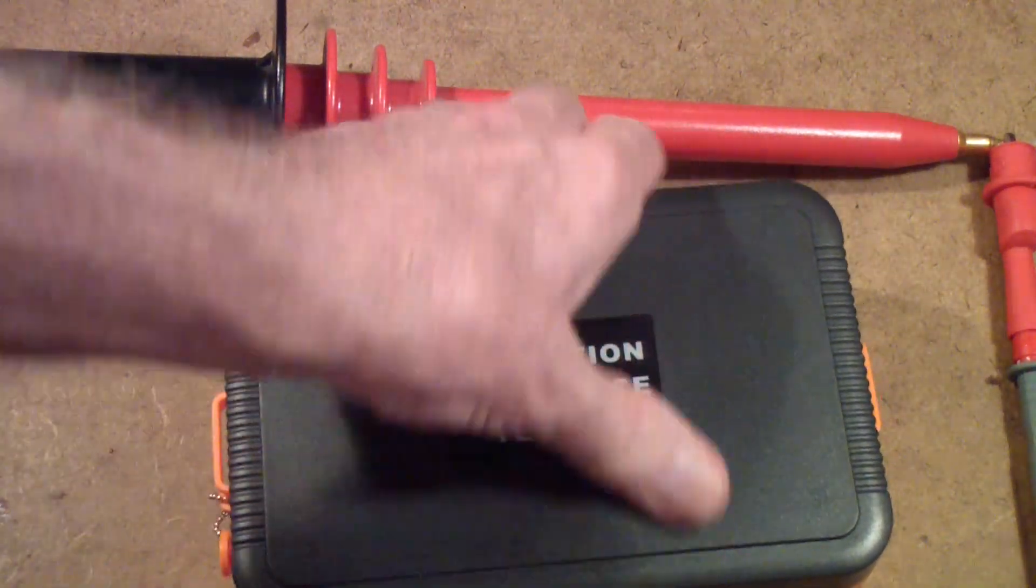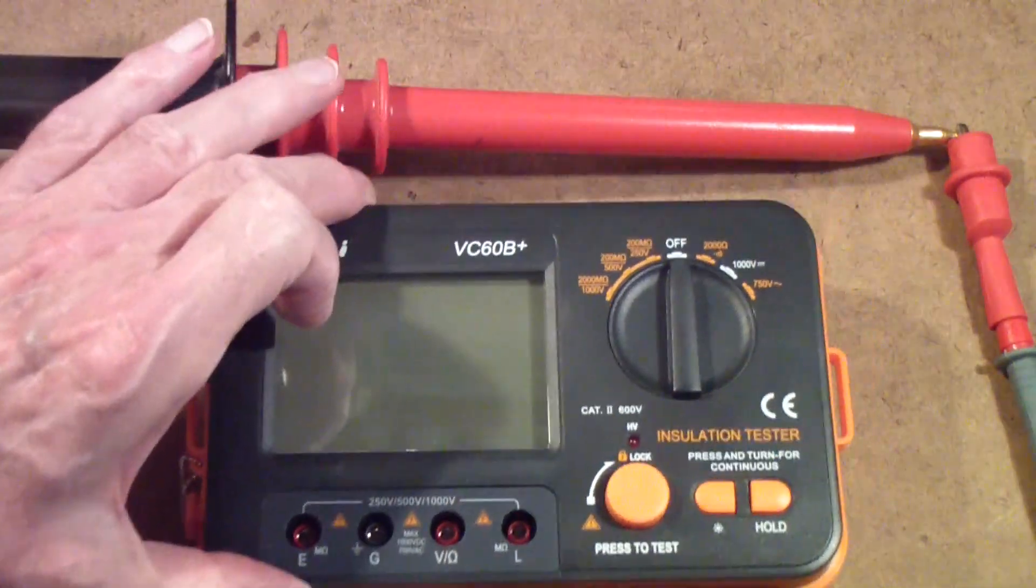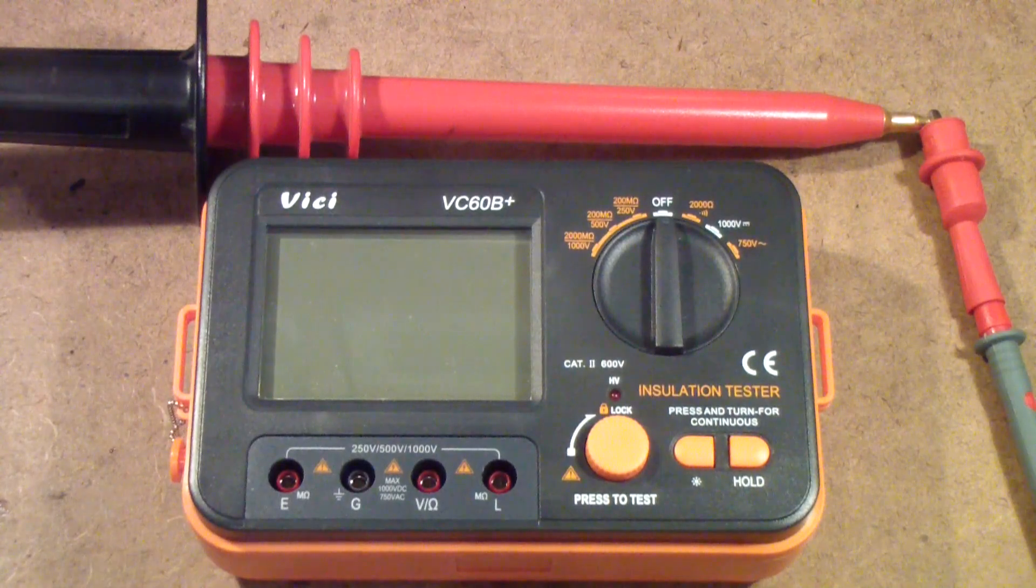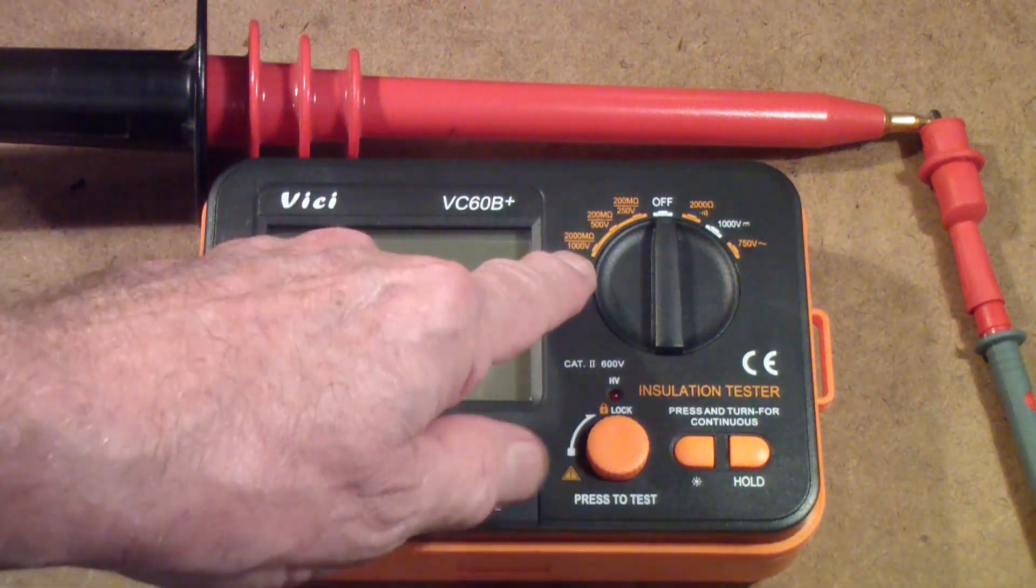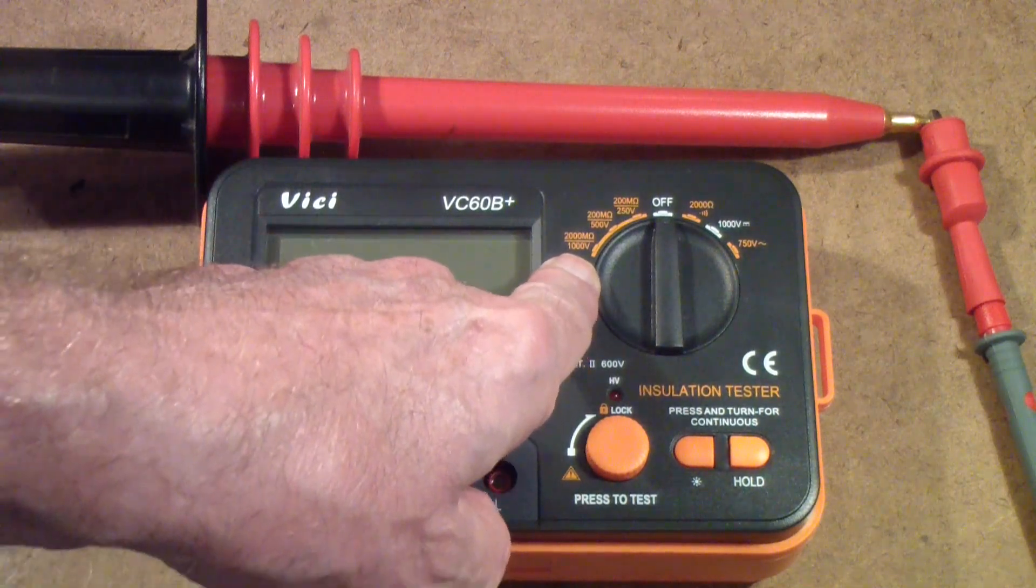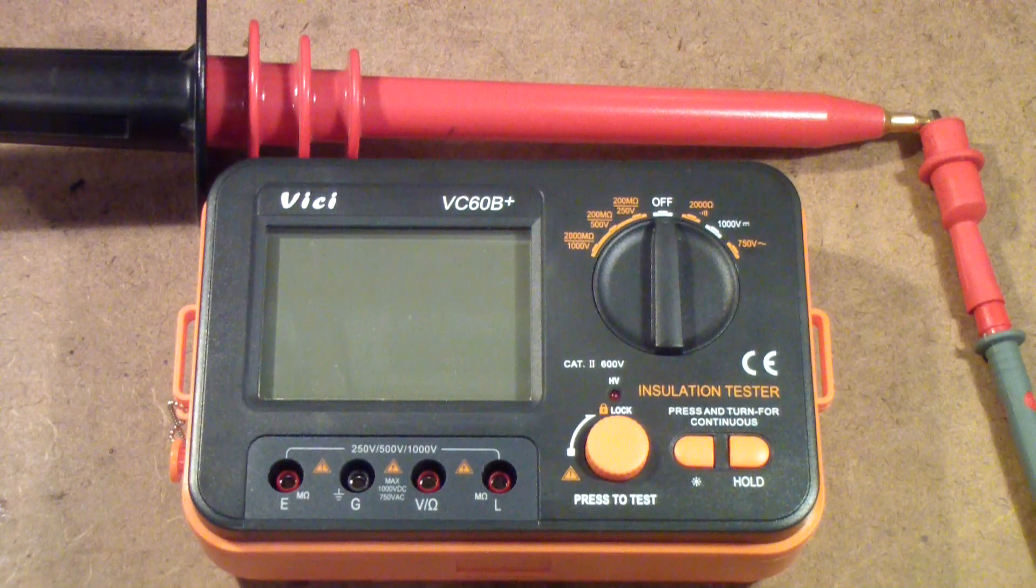So the VC60B, in my opinion, is the better tester, except for the fact that you do have to use 1000 volts to get the full 2000 meg rating of the meter. So I hope this has been helpful to you.